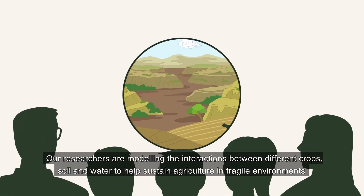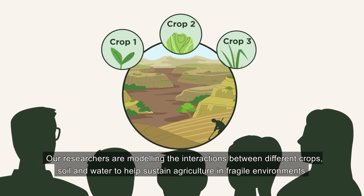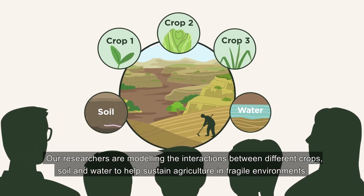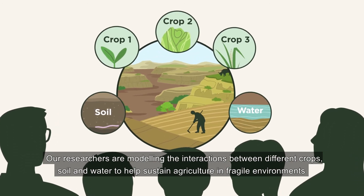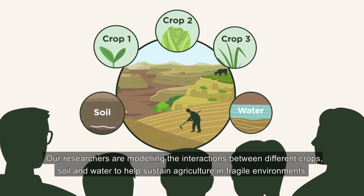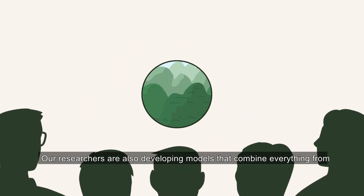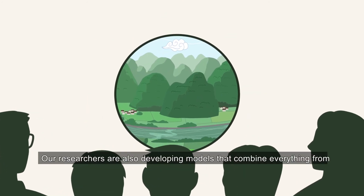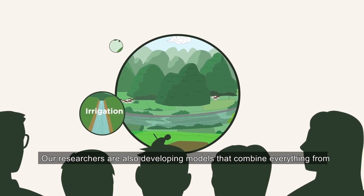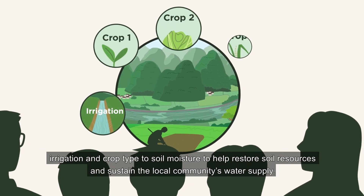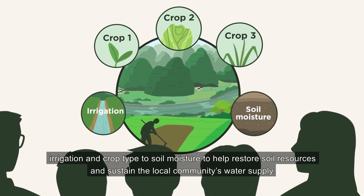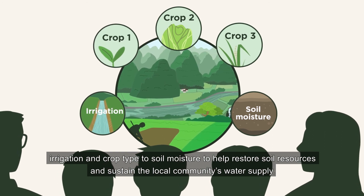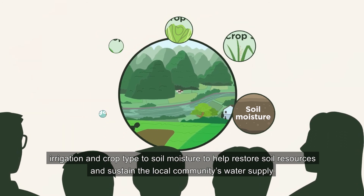Our researchers are modelling the interactions between different crops, soil and water to help sustain agriculture in fragile environments. Our researchers are also developing models that combine everything from irrigation and crop type to soil moisture to help restore soil resources and sustain the local community's water supply.